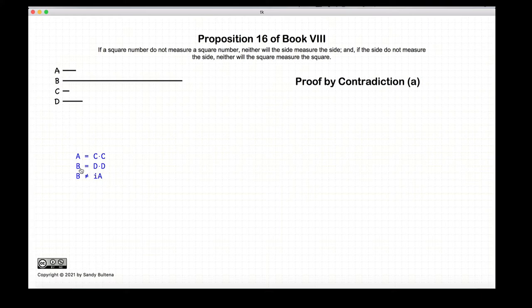So we are going to prove this by contradiction. We're starting with the first part of this proposition, which says that if A does not measure B, C does not measure D.